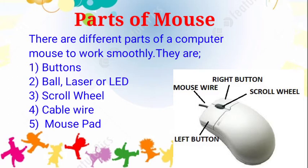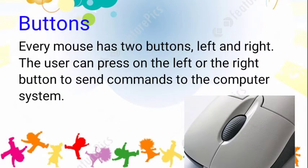Parts of a mouse. Just like we have many parts of the body, in the same manner there are also parts of the mouse. It has five parts: buttons, ball, laser and LED, scroll wheel, and cable wire and mouse pad. Let us discuss about them one by one. First is buttons — every mouse has two buttons, left and right. The user can press the left or right button to send commands to the computer system.